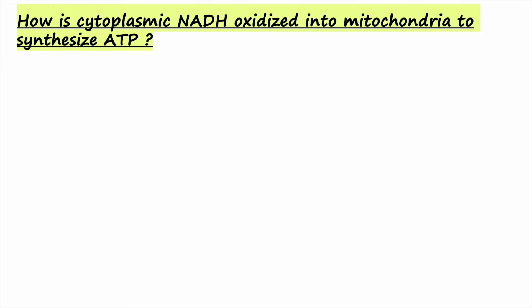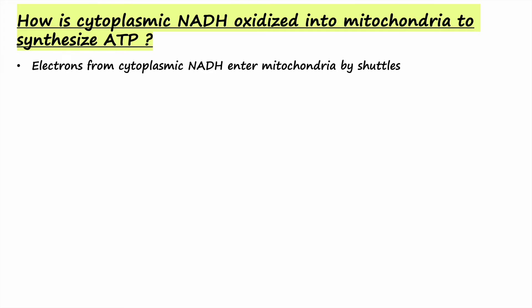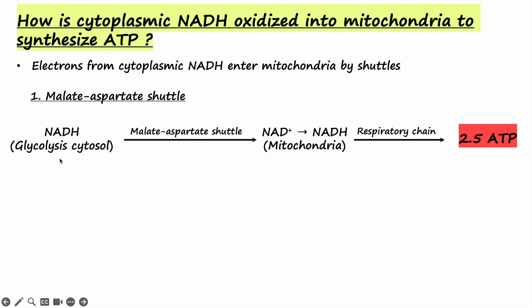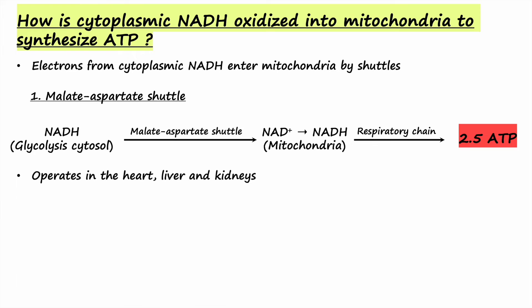Electrons from cytoplasmic NADH enter the mitochondria through shuttles. One shuttle already discussed is the malate-aspartate shuttle. In the malate-aspartate shuttle, NADH from the cytosol generated through glycolysis is shuttled such that NADH is regenerated in the mitochondria. In the mitochondria, NADH gives up its electrons to the respiratory chain to synthesize ATP. Because it is NADH, one NADH synthesizes 2.5 molecules of ATP, and it is heavily operated in the heart, liver, and kidneys.